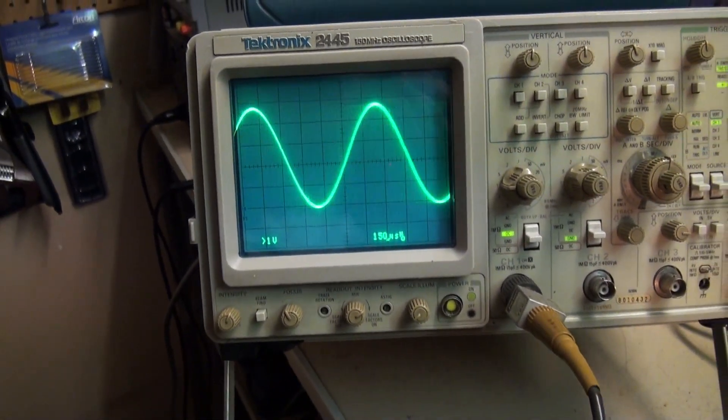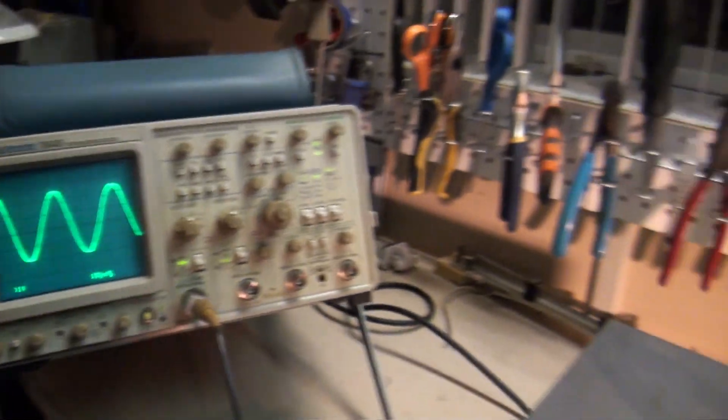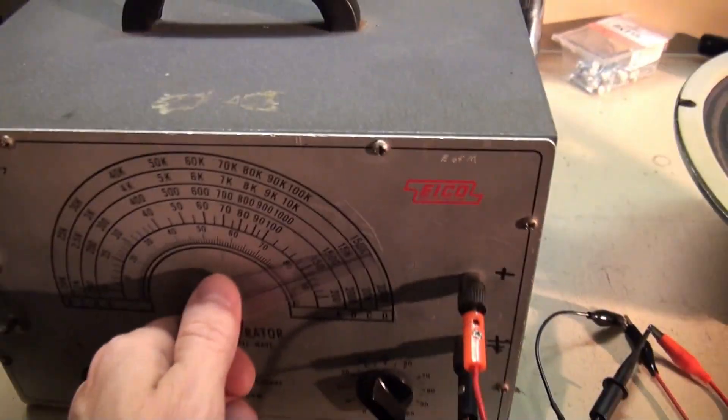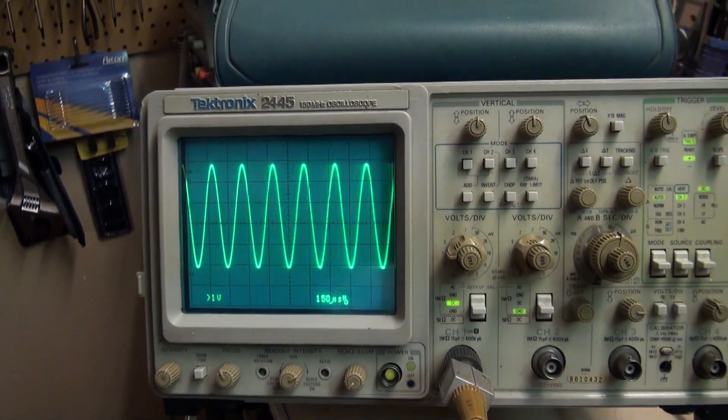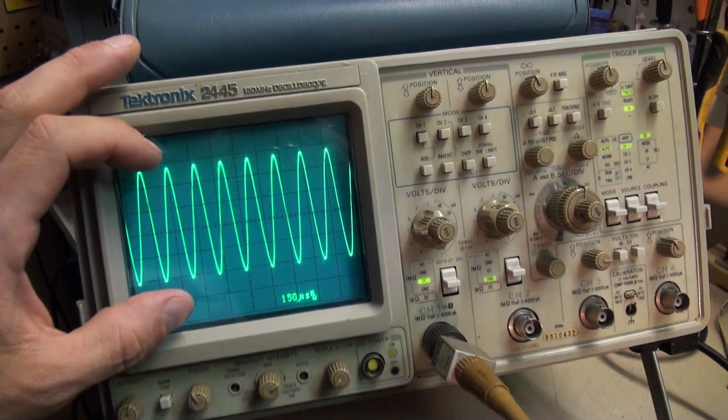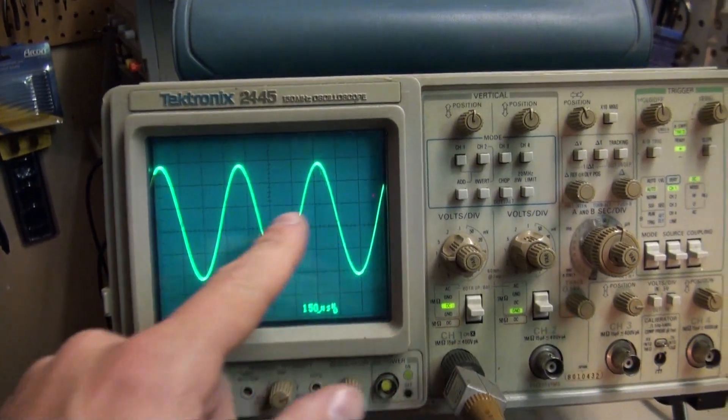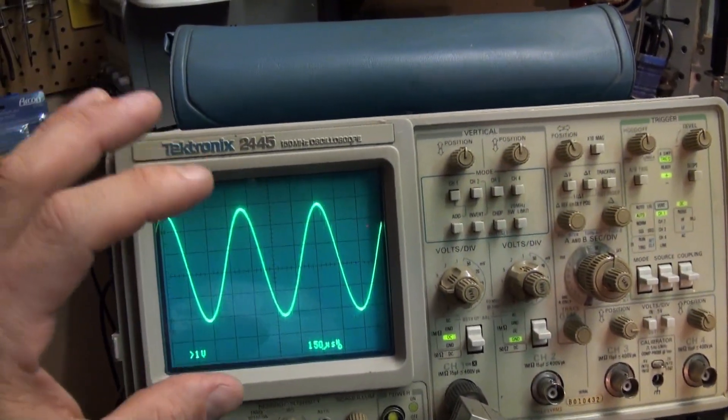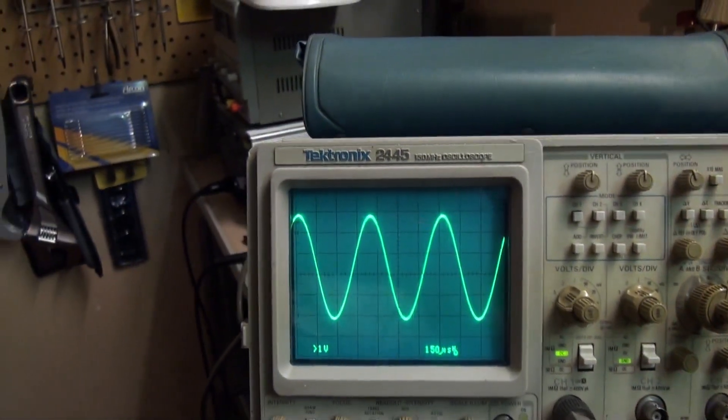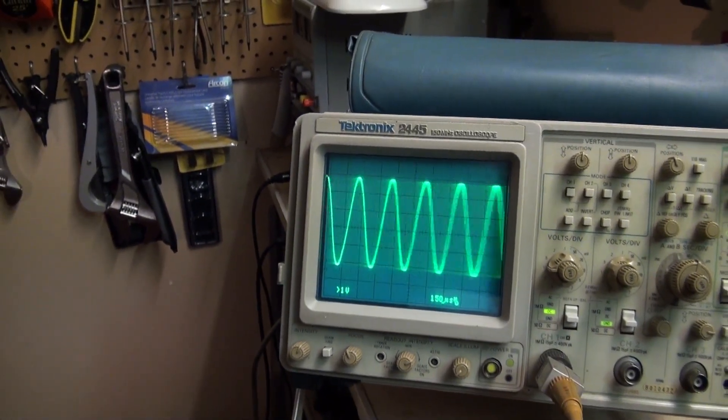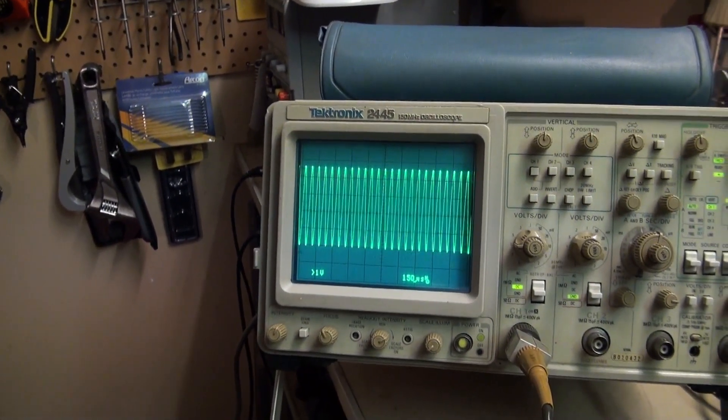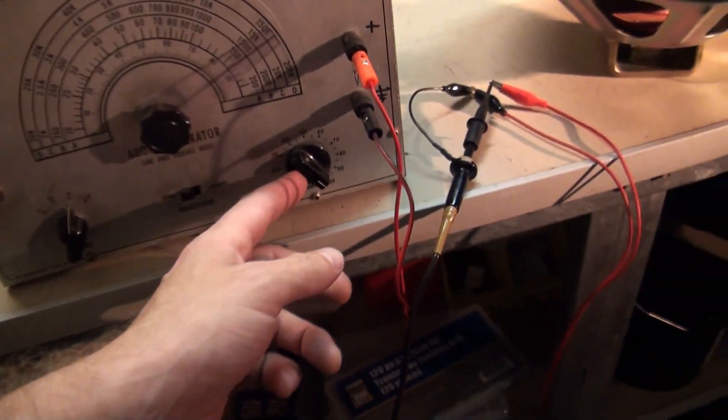So I'm changing the frequency by turning this dial here. What I'm hoping to demonstrate is that the actual amplitude of the signal is not changing. So if we sweep this, the amplitude, or the strength of the signal is, when I say strength of the signal, I mean the width of this signal is not changing. The frequency, or the speed of this going up and down, that is changing, but the actual amplitude, or strength of the signal remains constant. More or less, I mean this is an old piece of equipment so it's definitely not perfect.